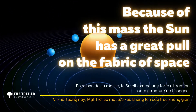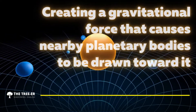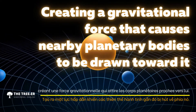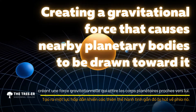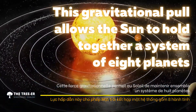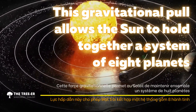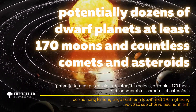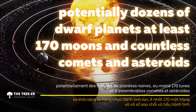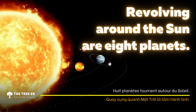Because of its mass, the Sun has a great pull on the fabric of space, creating a gravitational force that causes nearby planetary bodies to be drawn toward it. This gravitational pull allows the Sun to hold together a system of eight planets, potentially dozens of dwarf planets, at least 170 moons, and countless comets and asteroids.